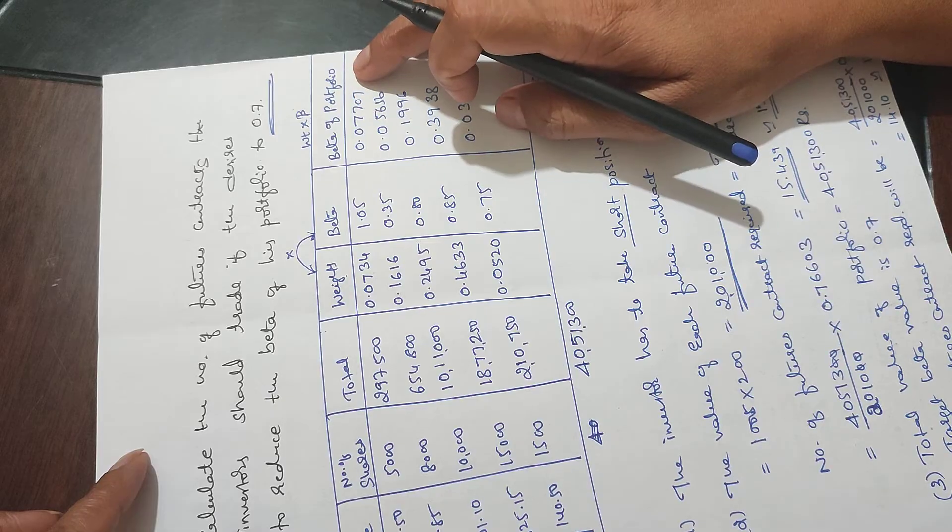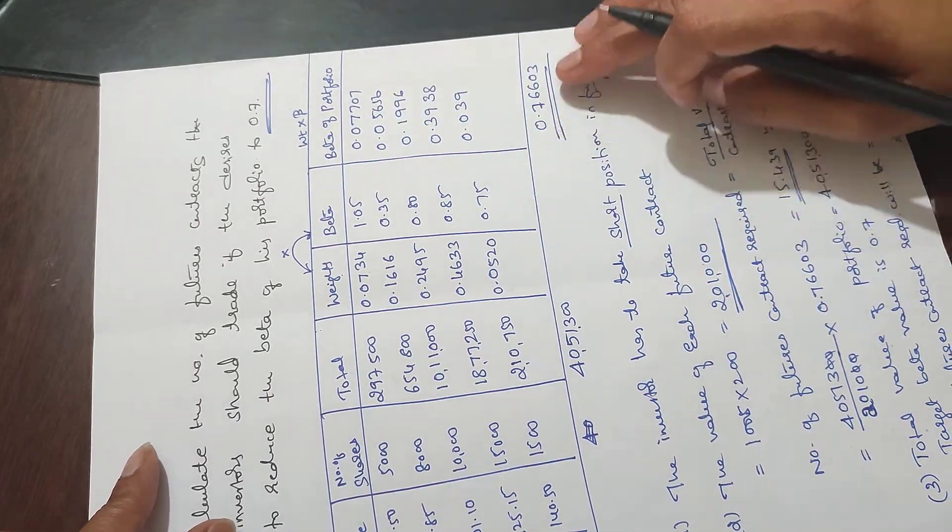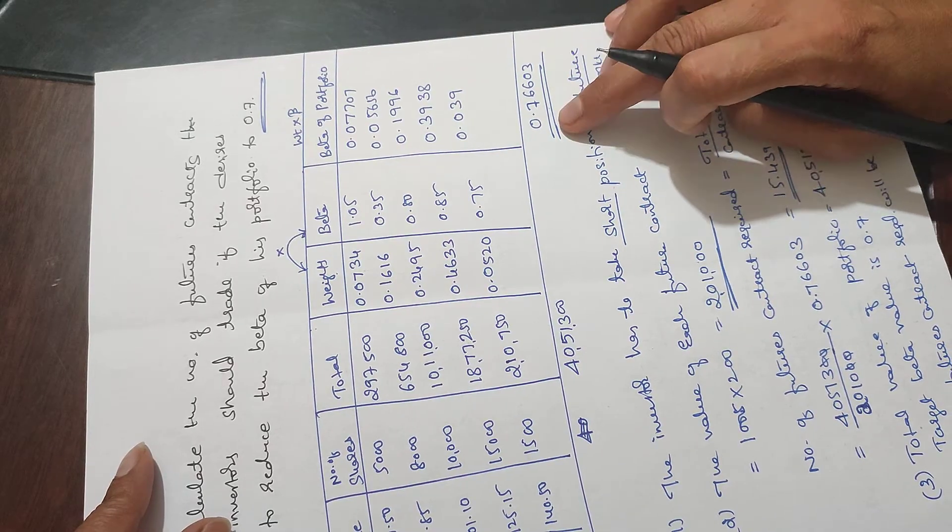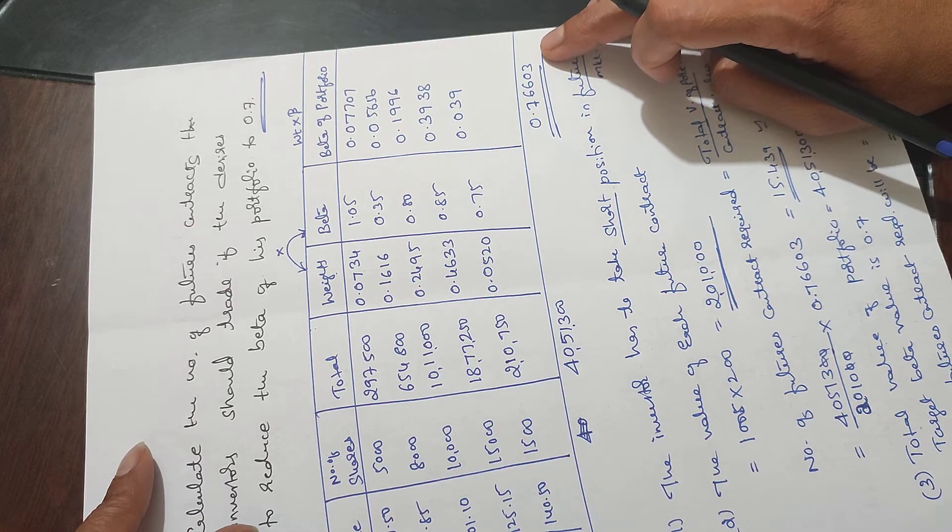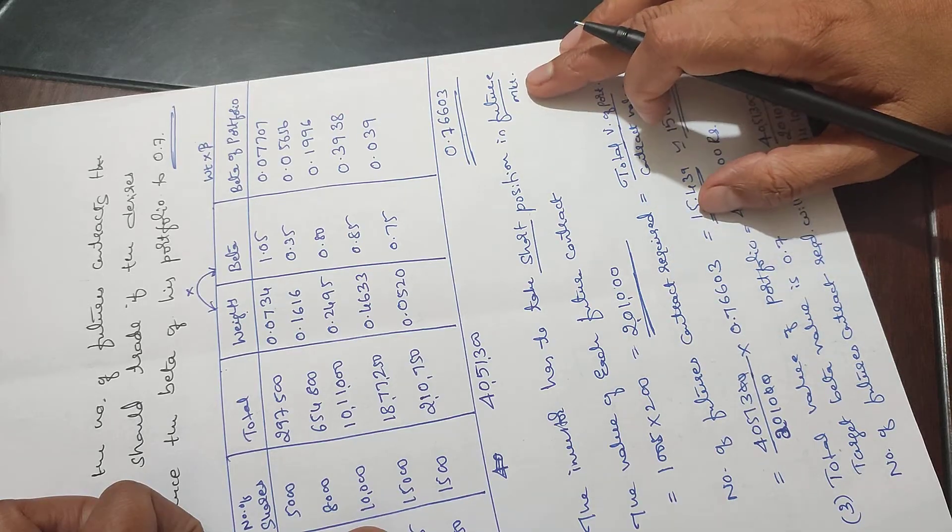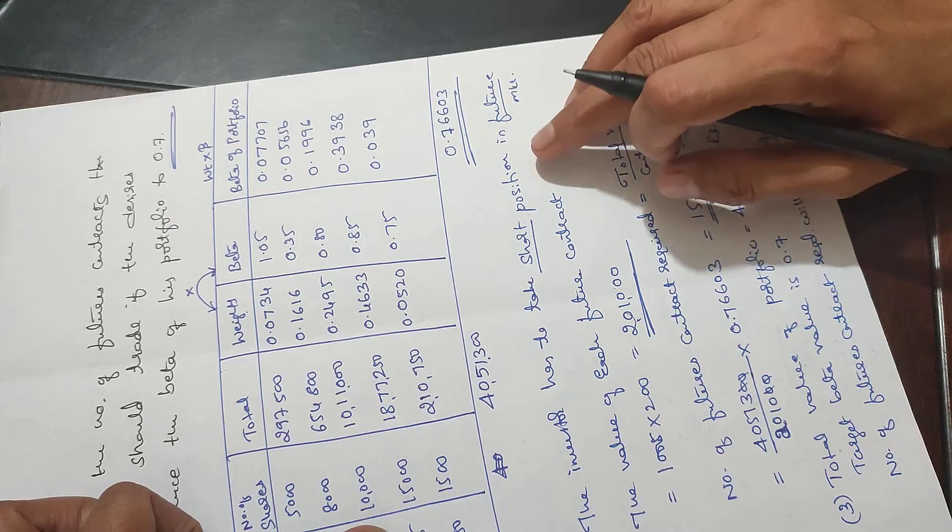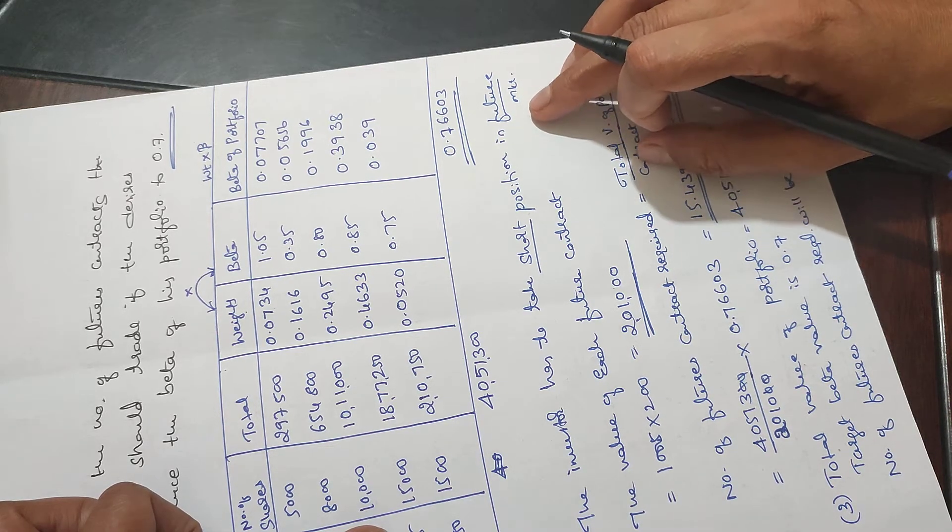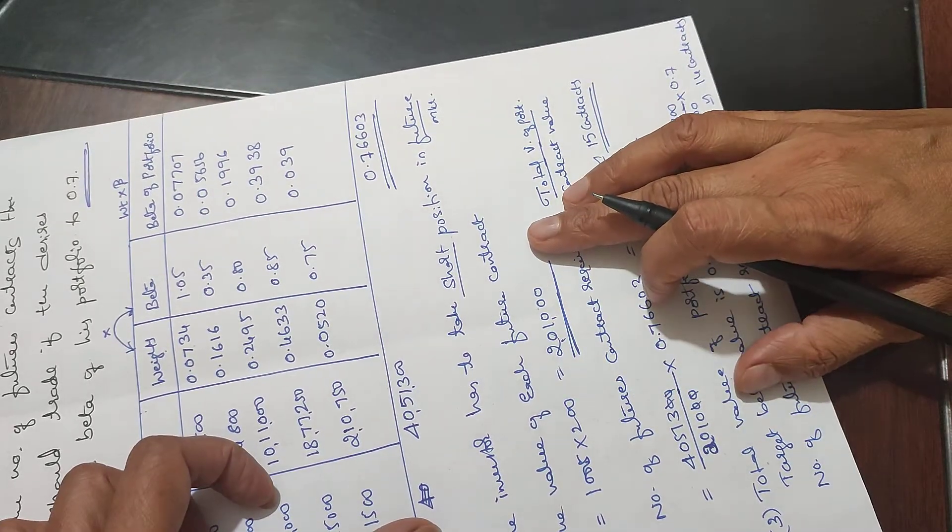To find portfolio beta, multiply weight by beta for each stock. Total gives the portfolio beta of 0.766. Since this is less than one, the investor should take a short position in the futures market expecting the price may go down.